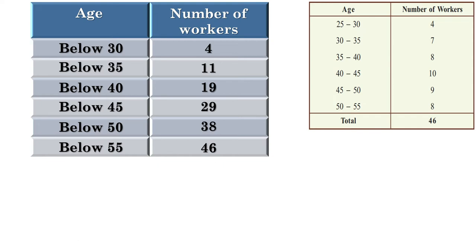It's an even number. Therefore, there are 2 workers at the middle. The 23rd worker and the 24th worker are at the middle. We have to find their ages. Below 40 there are 19 workers, and below 45 there are 29 workers. That means the workers starting from 20 to 29 have their ages below 45. Therefore, the 23rd and 24th workers also have their ages below 45.